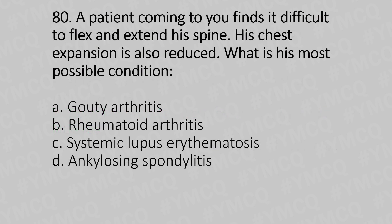Question 80: A patient finds it difficult to flex and extend his spine, and chest expansion is also reduced. What is the most possible condition? Option A: gouty arthritis; option B: rheumatoid arthritis; option C: systemic lupus erythematosus; option D: ankylosing spondylitis. The answer is option D: ankylosing spondylitis.